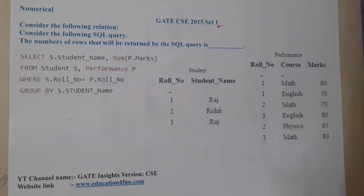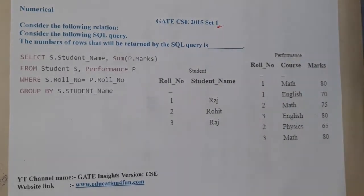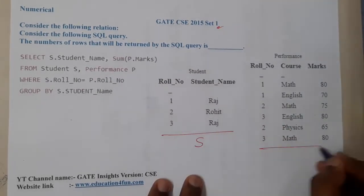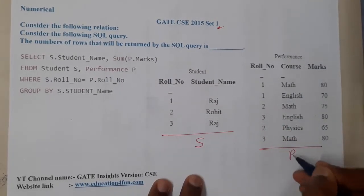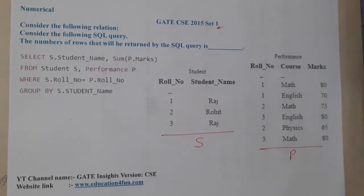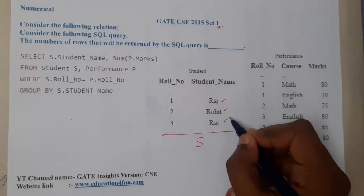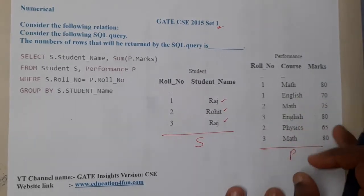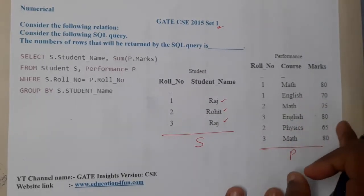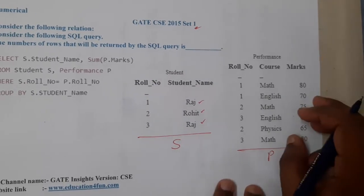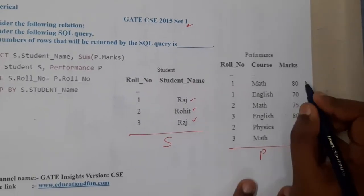The query is SELECT s.student_name — where s refers to the student table and p refers to the performance table. So we are trying to find the student names s.student_name, and also SUM of marks p.marks, so we are trying to combine them.